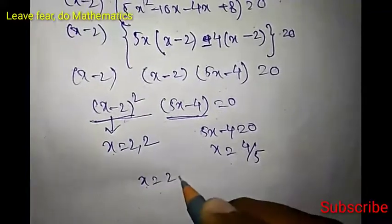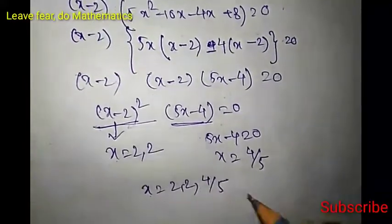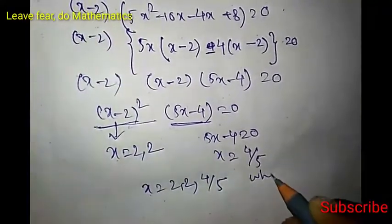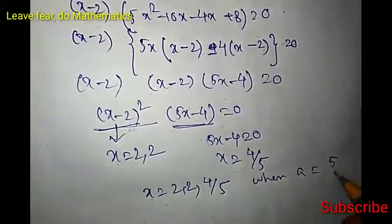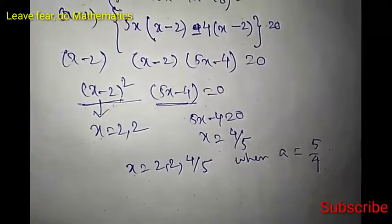The roots are x equals 2, 2, and 4/5 when A equals 5/4.